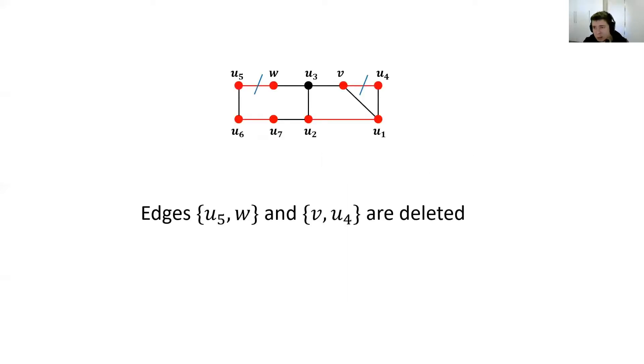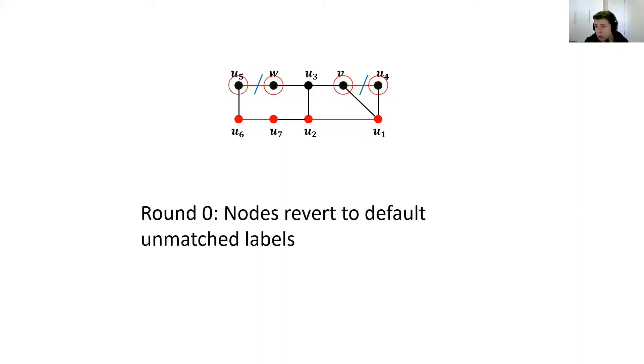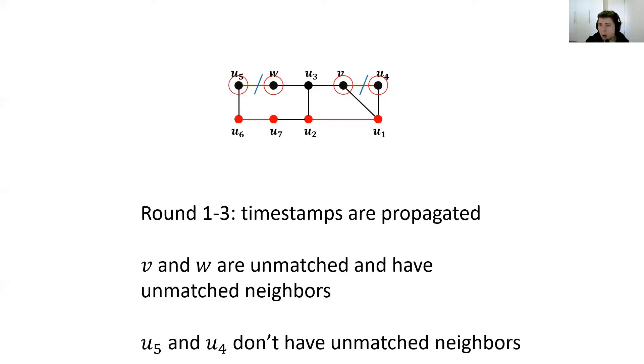Next, I would like to give you an illustration of our algorithm on the problem of maximal matching. Suppose we have a graph like so and the red edges correspond to the maximal matching. Suppose that we delete edges U5W and VU4. In round zero, relevant nodes revert to a default label which in the case of maximal matching is just being unmatched. Also, the red circles over the nodes represent that these nodes are dirty and they haven't yet obtained a final correction which occurs at the end of an epoch. Now in rounds one, two, three, timestamps are propagated. U and V have unmatched neighbors, so one of them should be matched. U3 and U4 and U5 don't have unmatched neighbors.